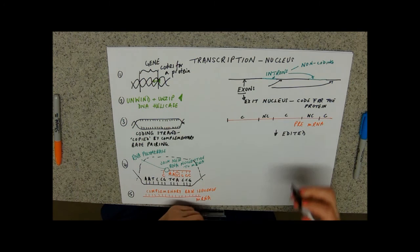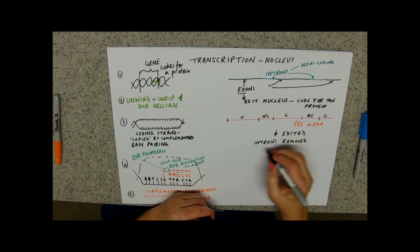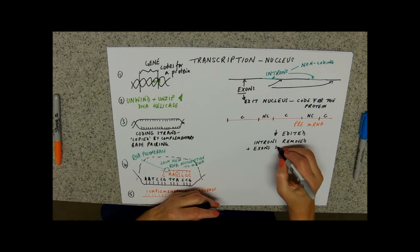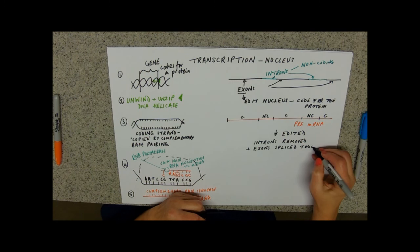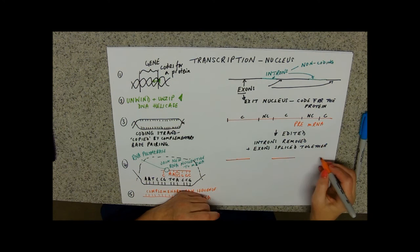The editing means that the introns are removed, and the exons are spliced. Splicing just means joining, spliced together. It's a great word, spliced. It always makes me think of sailors splicing ropes together. I don't know why that makes me happy, it just does. So, now, you've got your coding bit. Coding, coding, coding.